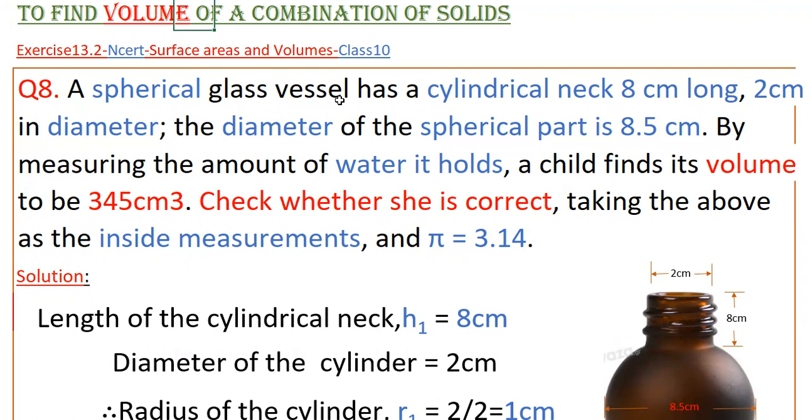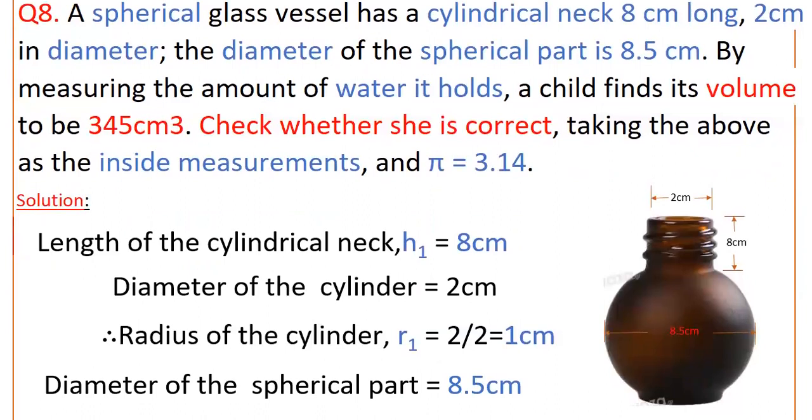So, here the spherical glass vessel has a cylindrical neck. The measurements of this neck are given: height is 8 cm. Length of the cylindrical neck, that is height h₁ is 8 cm, and diameter is also given, that is 2 cm.